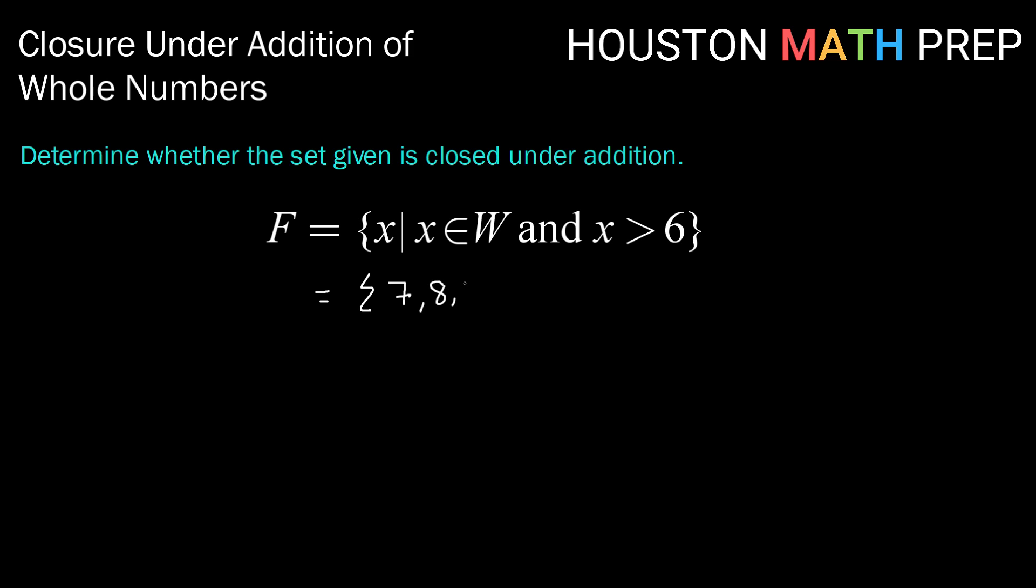That would be 7, 8, 9, 10, and so on and so forth, right? All the way out as far and as high as you could count. So let's think about this. Well, let's take even the smallest value, right? Let's add the smallest value with itself. 7 plus 7.